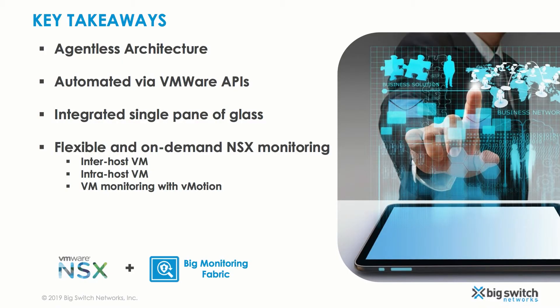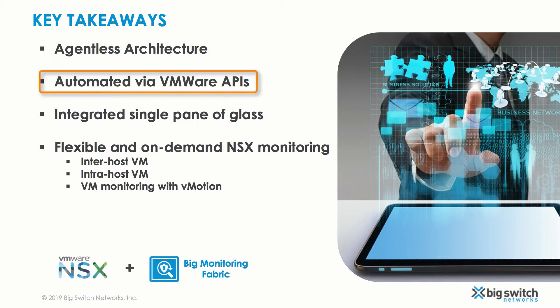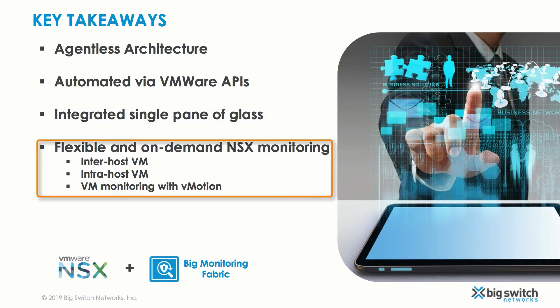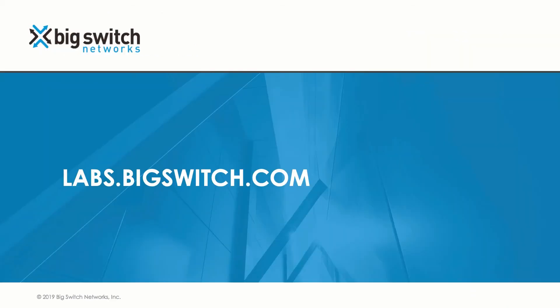BigMon NSX integration provides agentless VM monitoring, which avoids deployment and operational complexities associated with traditional agent-based solutions. It uses automation leveraging built-in VMware APIs to provide end-to-end network traffic visibility in a virtual environment, with an integrated single pane of glass for NSX monitoring. It also offers flexible and on-demand NSX VM monitoring for intra-host traffic, inter-host traffic, or monitoring a VM when it migrates to another host via vMotion. To try the hands-on lab with the Big Monitoring Fabric, please visit us at labs.bigswitch.com. Thank you for watching.